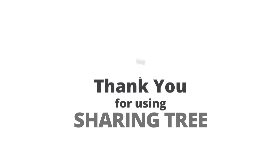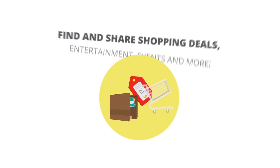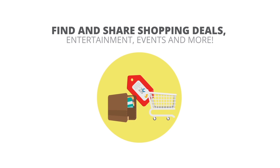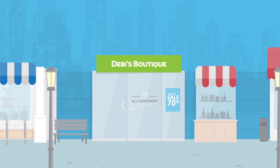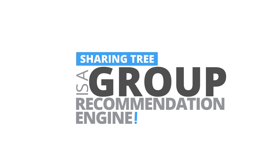Thank you for using SharingTree. This app allows you to find and share great shopping deals, entertainment, events and more in your area based on the recommendations of your friends and family. However, SharingTree is much more intelligent than your basic deal finder. It will actually predict the information you're most interested in based on the preferences and geographical travel patterns of you and your friends. In other words, SharingTree is a group recommendation engine.